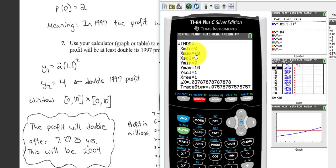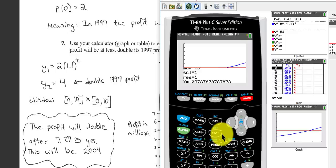Here's my window, 0 to 10, 0 to 10. I press graph. So you can see the red line, the straight line, is the Y2 equals 4. The line with the curve that looks exponential is the 2 times 1.1 to the T.